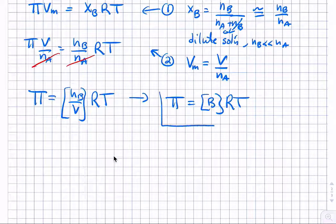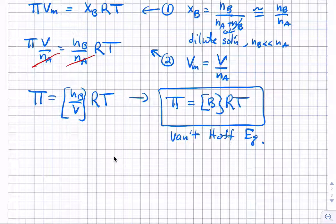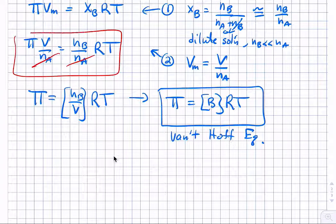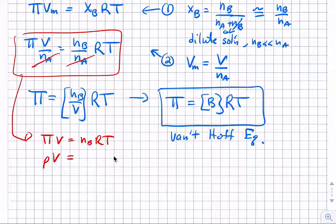This equation is the end of the basic derivation, and we've arrived at what's called the Van't Hoff equation. Note that the earlier form, pi·V = nB·RT, looks a lot like the ideal gas law PV = nRT — the similarity is notable.